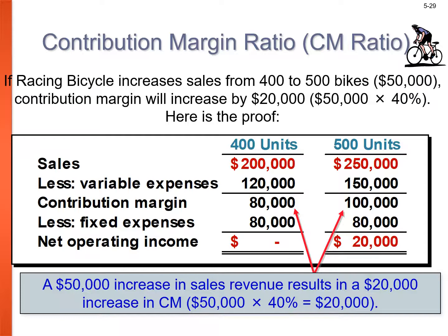We can verify: when 400 bikes are sold, we're at break-even. When 500 bikes are sold using the contribution income statement — $500 sale price, $300 variable expenses — we get a $20,000 profit. The CM ratio is a quick way to show what happens to contribution margin when sales volume increases or decreases.